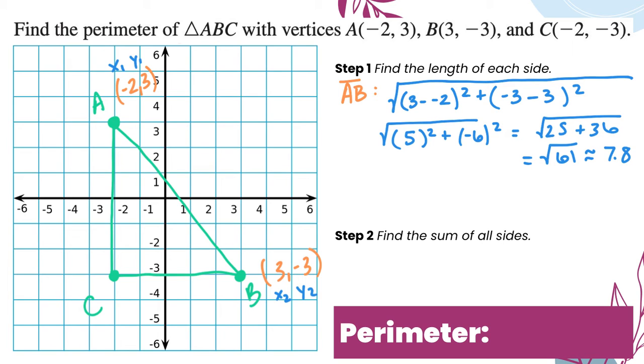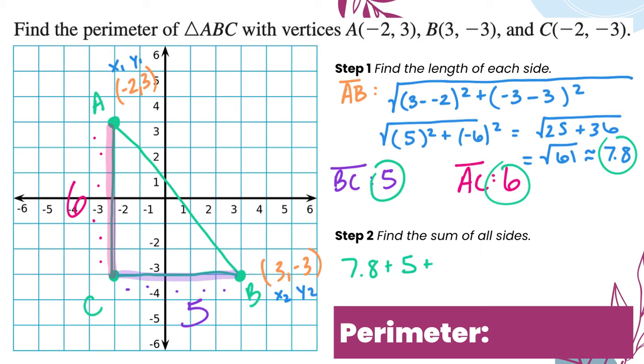I also want to find the length of my other sides, but those are less work because those lines are not diagonal—they're horizontal or vertical. When I'm looking for the length of BC, I can just count this length: 1, 2, 3, 4, this is 5 units long. I can do that same work for AC, which is 6 units long. So I have my three measures to find the perimeter: 7.8 plus 5 plus 6 gives me 20.8. That is the perimeter for this triangle.